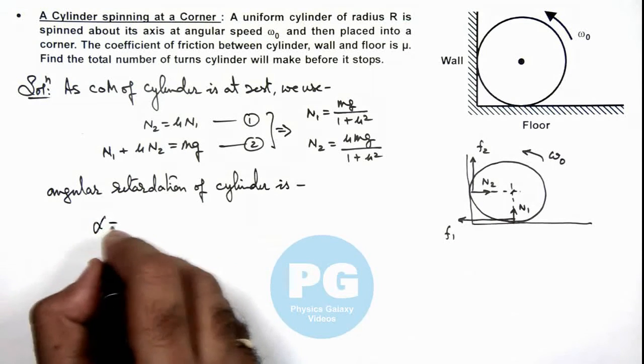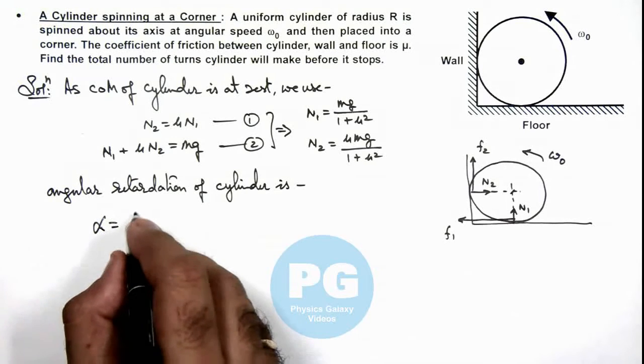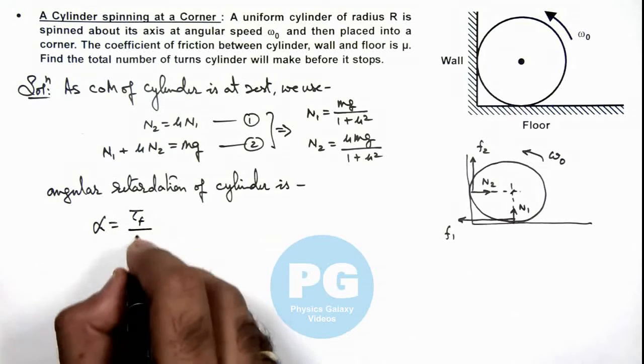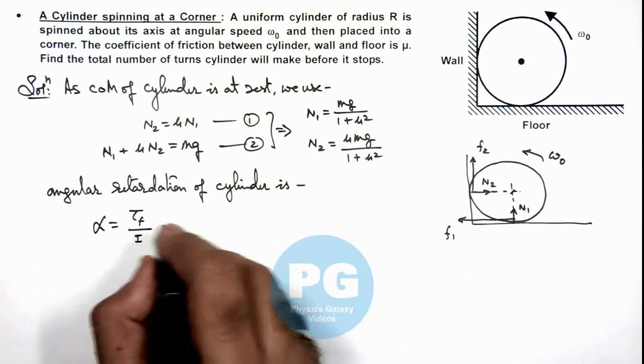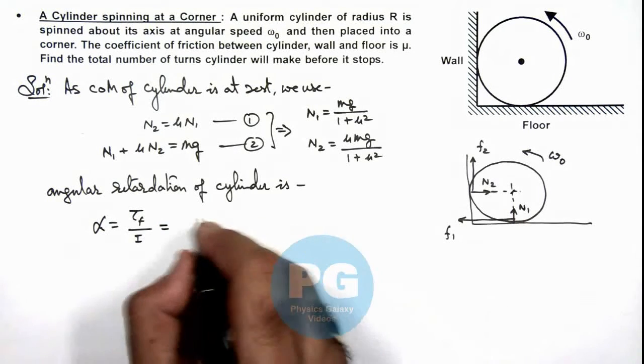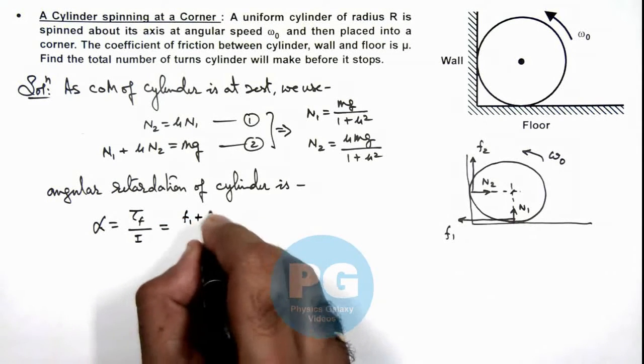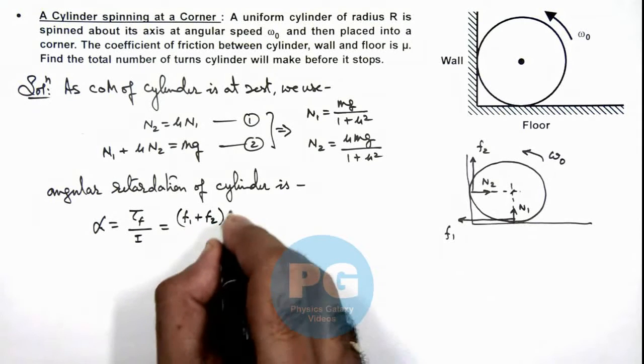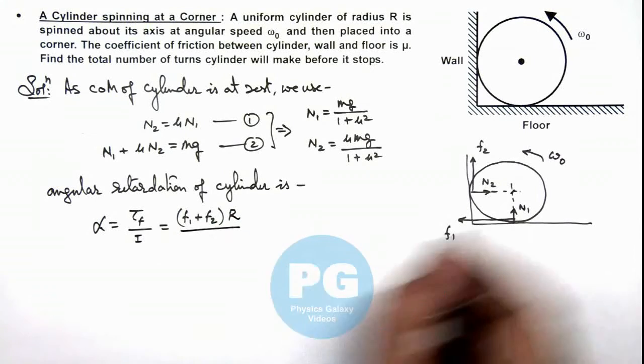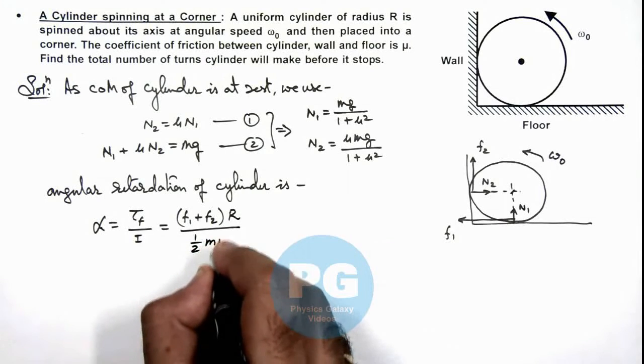So angular acceleration alpha we can write as torque due to friction divided by the moment of inertia. And the torque of friction we can write here as f1 plus f2 multiplied by r, divided by the moment of inertia of cylinder, which is half mr squared.